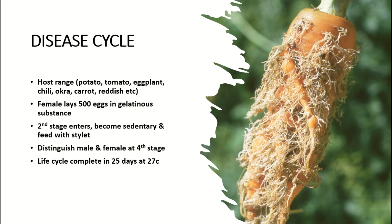At the J4 stage, females become pear-shaped and are sedentary on the plants — they are swollen and somewhat pear-shaped. The male nematode, meanwhile, remains in a larval form and is motile. The life cycle completes in around 25 days at 27 degrees centigrade.